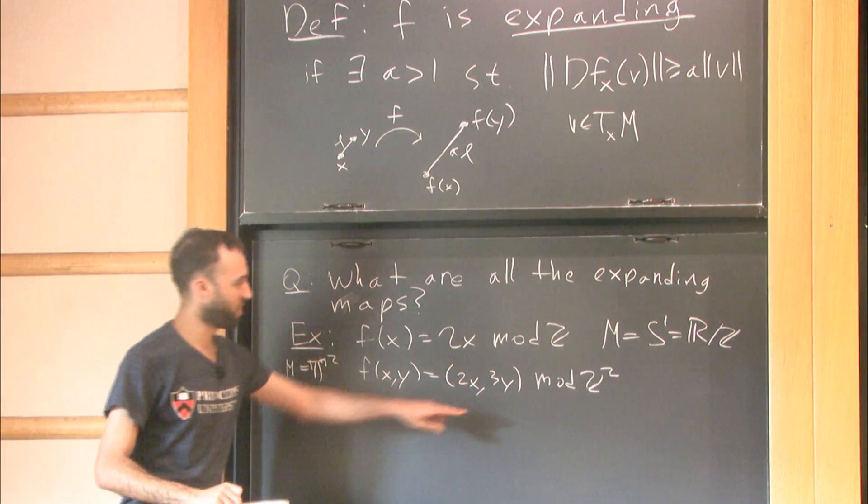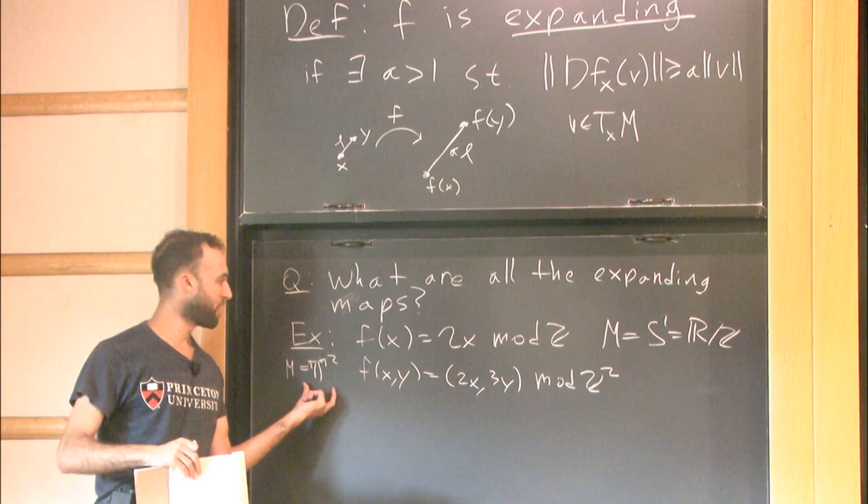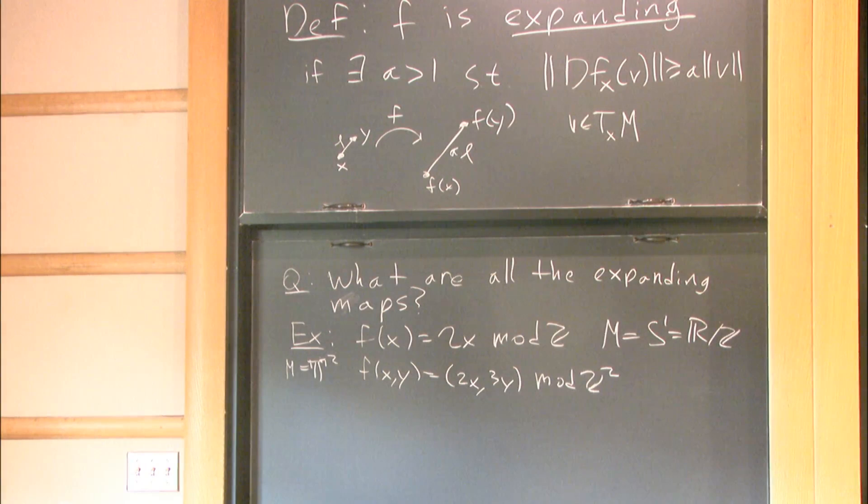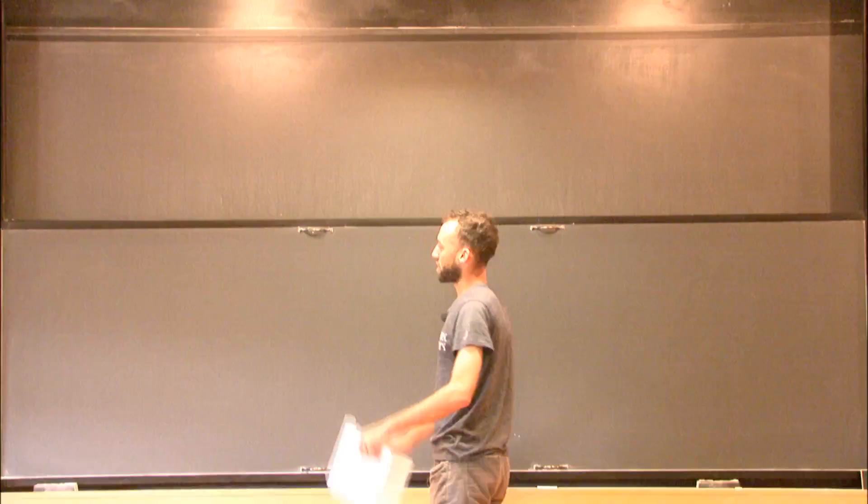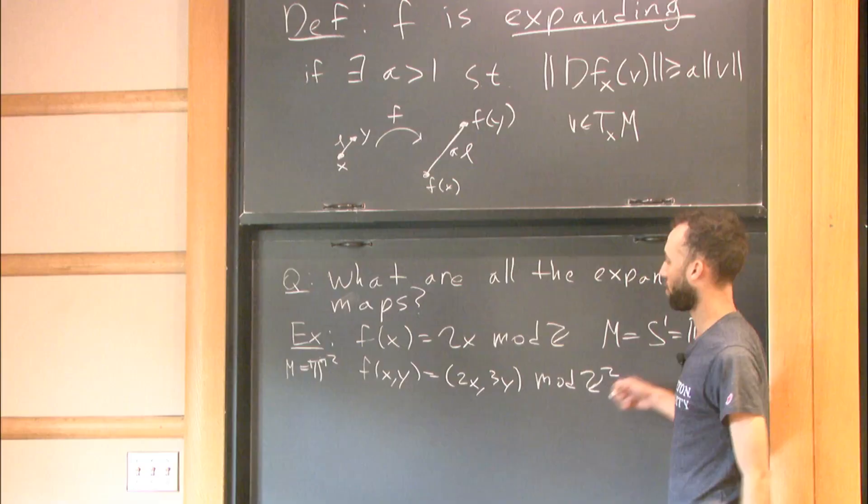And I could continue in this fashion to get expanding maps on tori defined in some algebraic fashion by writing down any integer matrix, which has all eigenvalues of absolute value greater than 1.